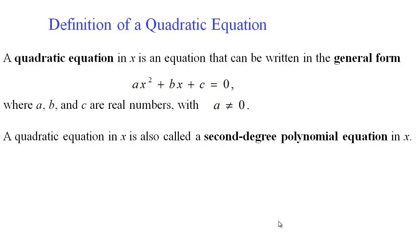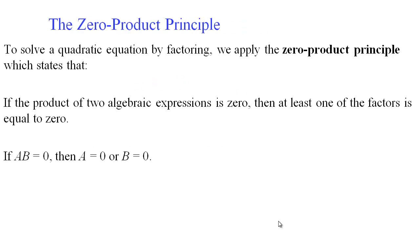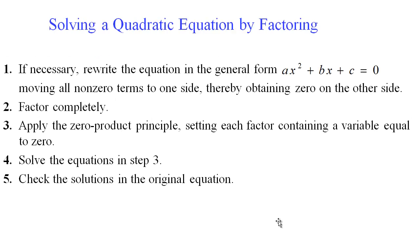Let's move on to quadratics — the more important type that you will see a lot of. Anything of the form ax squared plus bx plus c equals zero is a quadratic. We remind ourselves of the zero product principle, because that is what we need to solve quadratics. If the equation is not already in general form, move all constants to one side so that zero is on the other, factor if possible, set each factor equal to zero, solve, and check your solutions.